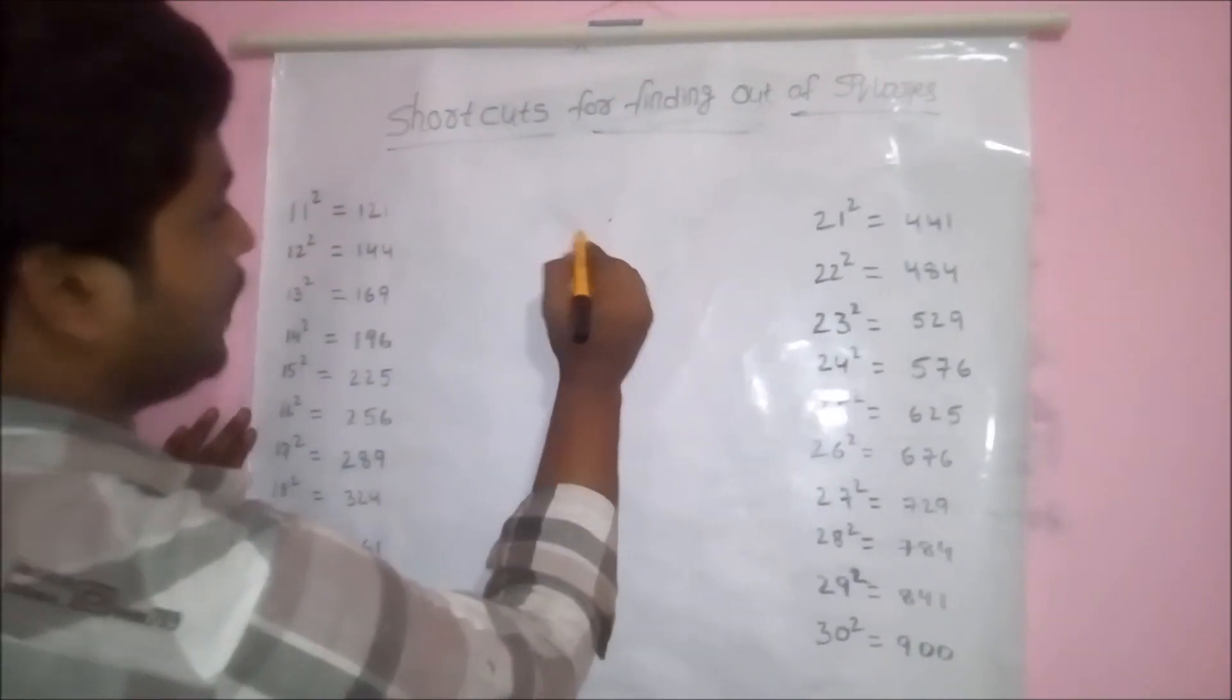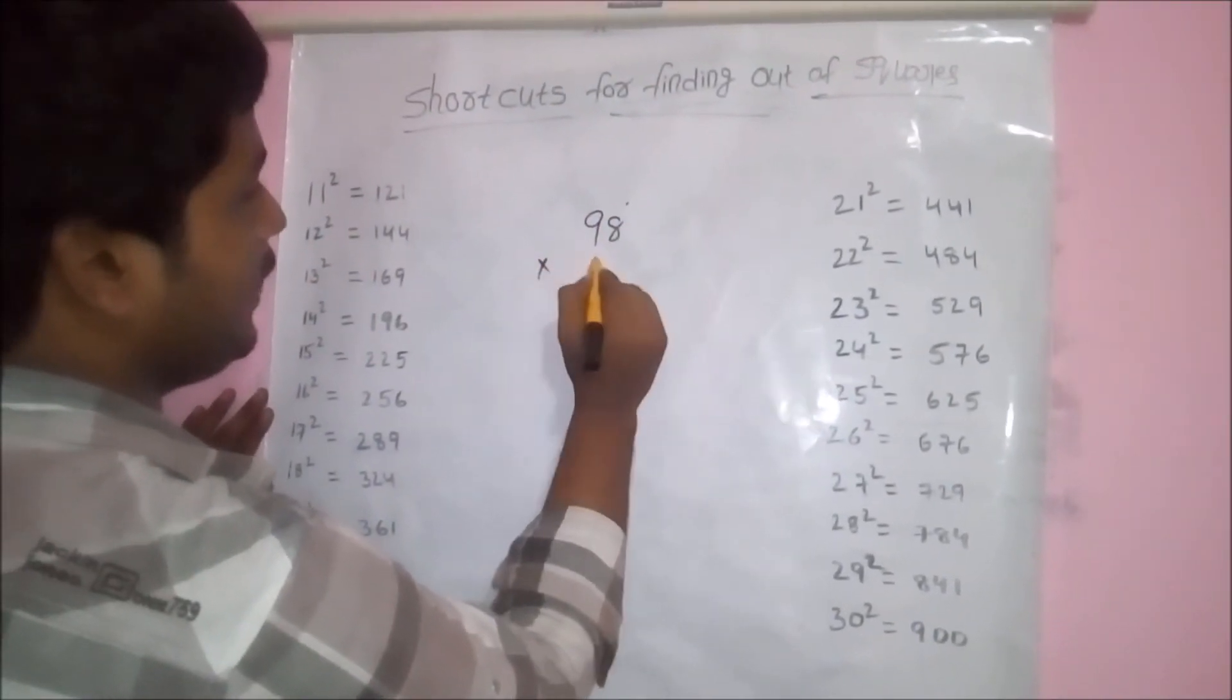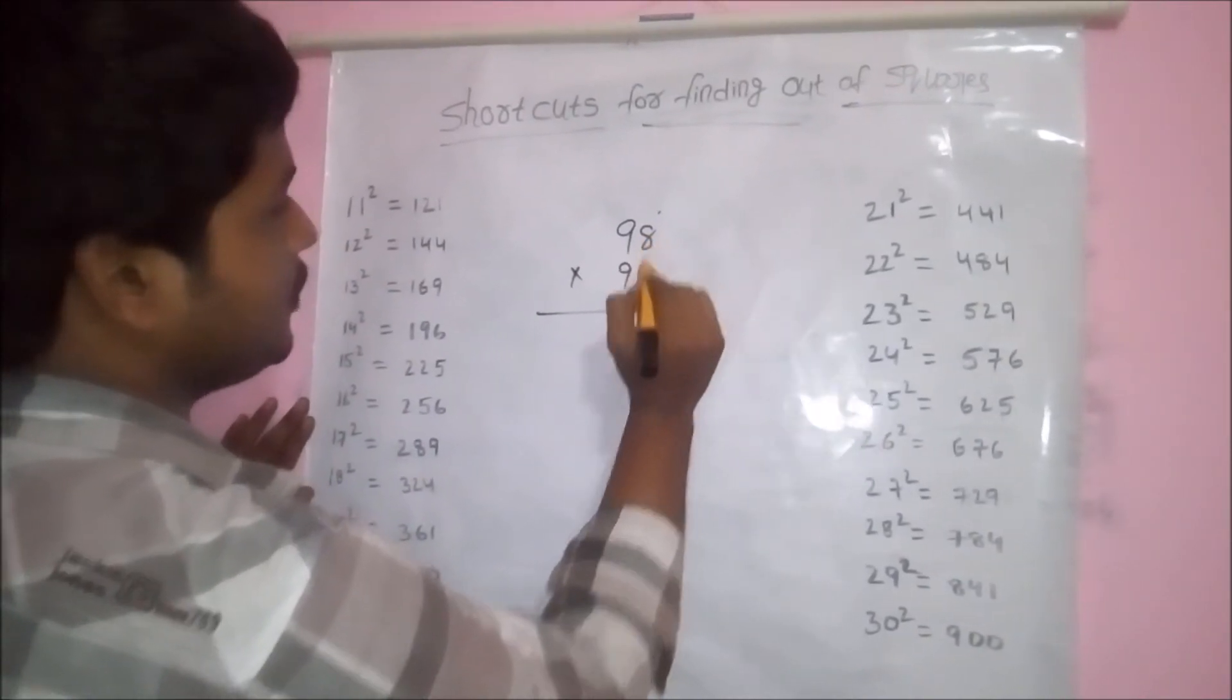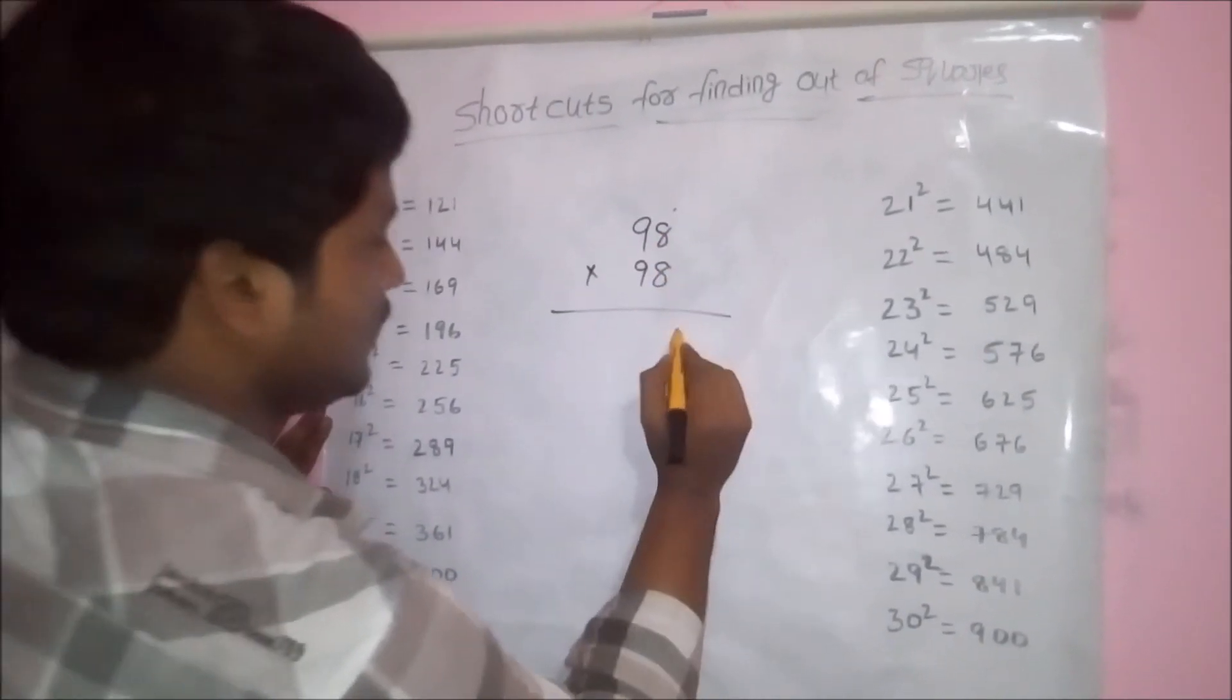Next one is multiply 98 into 98. For shortcut method, first of all, for unit digit, we have to square them. 8 eights are 64.